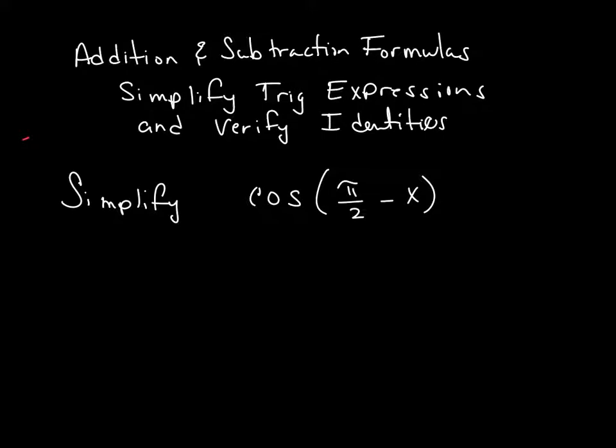So what we do is we start by breaking apart the sine functions. Remember, you have to use the formula, so that means you have the cosine of pi over 2 times the cosine of x here. Now, because it's the cosine, this sine changes, and now this becomes positive.